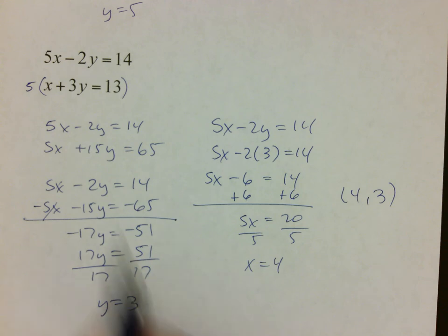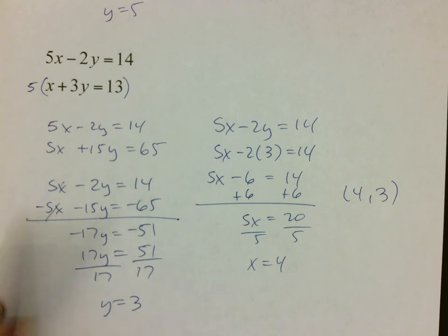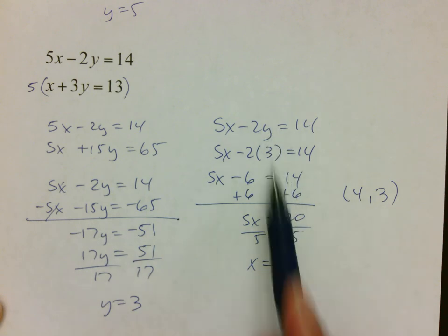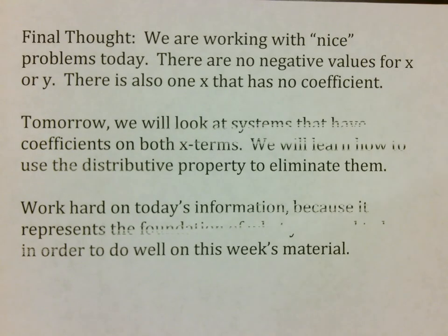So this is the process of elimination. Elimination is simply distribute to make your numbers match. Switch the bottom row to make opposites. Combine terms. Solve using algebra. Substitute and solve using algebra. Yes, it is a little bit longer of a process. But it's not nearly as bad as what it seems. We are working with nice problems today. There are no negative X's or Y's. There's also an X that has no coefficient. Tomorrow, we're going to look at things that have coefficients on both X terms. We're going to learn how to use the distributive property for that. Make sure you work hard on today because it's the foundation of what you need to know in order to do well on this week's material, which is the last week of material for this semester. Make sure you ask for help. Go ahead and start your MathXL and good luck.